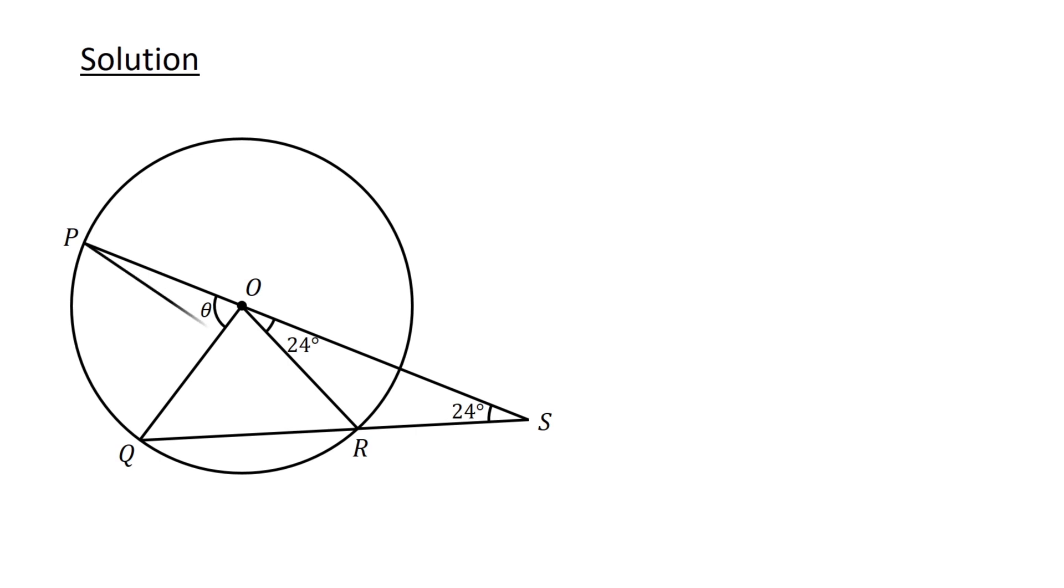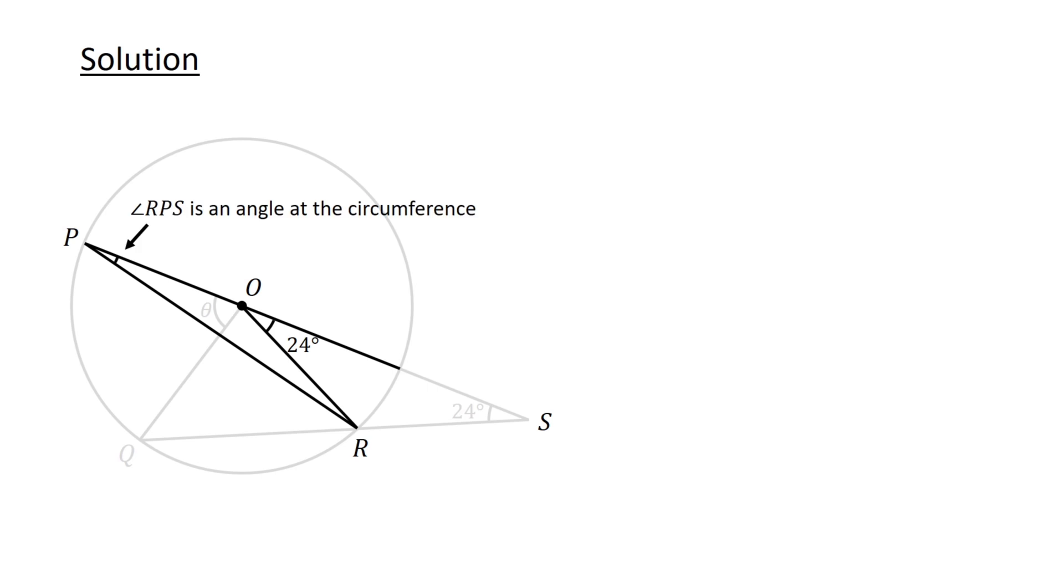Next, connect P to R and focus on this part of the diagram. Angle RPS is an angle at the circumference and angle ROS is an angle at the center, subtending the same arc.